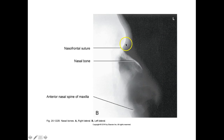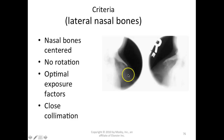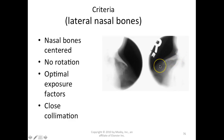You can identify the nasal bone and the acanthion on the lateral. Different views using a cone are excellent — you want nasal bones centered with no rotation, properly exposed so you can see fracture lines, and with very tight collimation. Make sure you get enough technique to see fractures within the nasal bone.